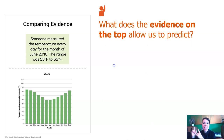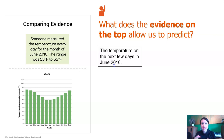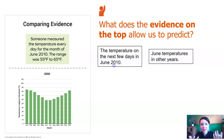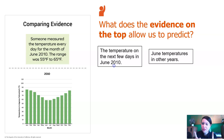What does the evidence on the top allow us to predict? We could use it to predict the temperature for the next few days of that month in 2010. We could also predict the June temperature in other years — if it was 55 to 65 degrees Fahrenheit in June 2010, we could expect the same in June 2011, 2012, 2020, 2030. But we can only predict for the month of June.